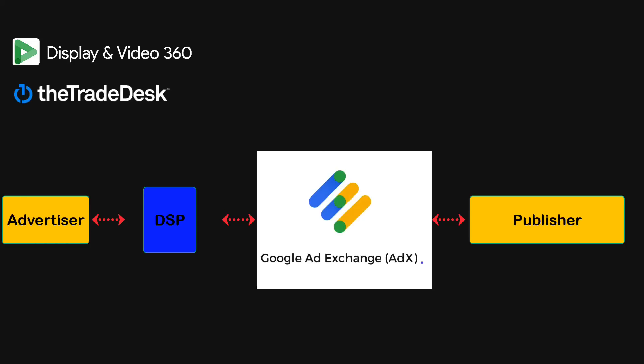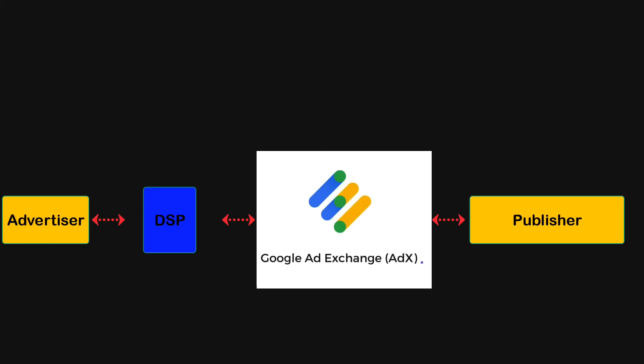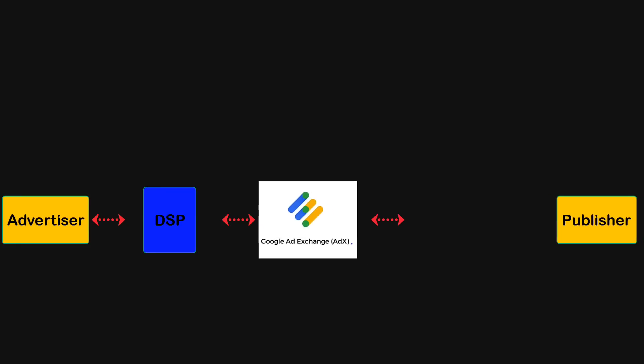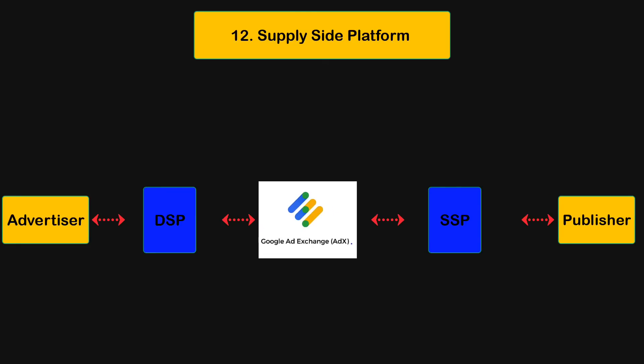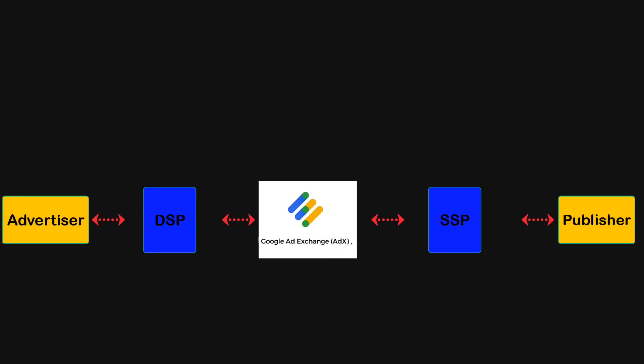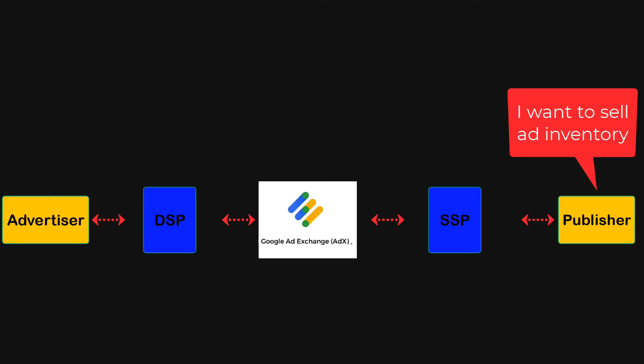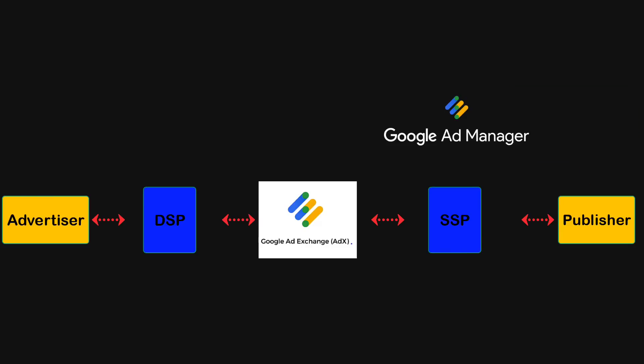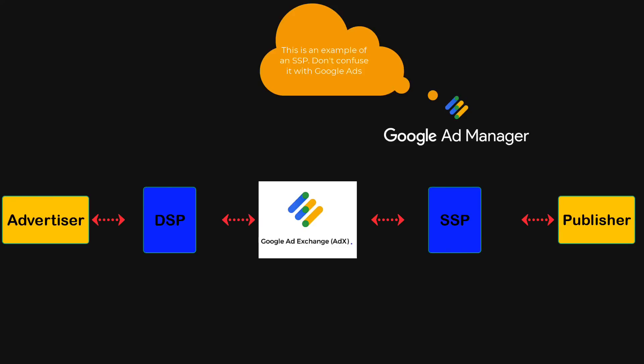Some examples of demand-side platforms are DV360, The Trade Desk, and many others. On the other hand, for publishers to plug their inventory into ad exchanges and sell it, they use specialized software called SSPs, or supply-side platforms — because publishers have a supply of ad inventory.